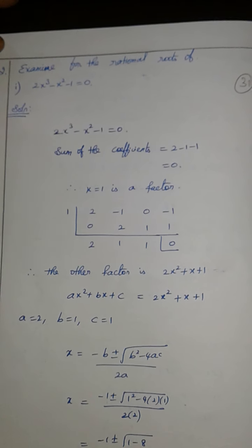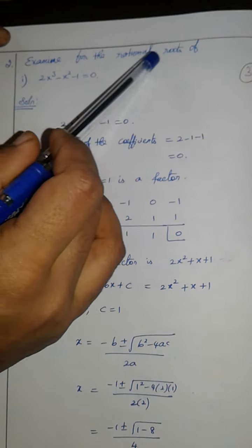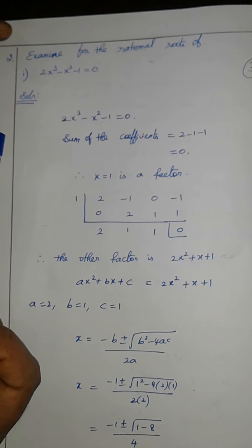This is x is 3.5. Question number 2. Examine for the rational roots. Rational roots is the root sign.